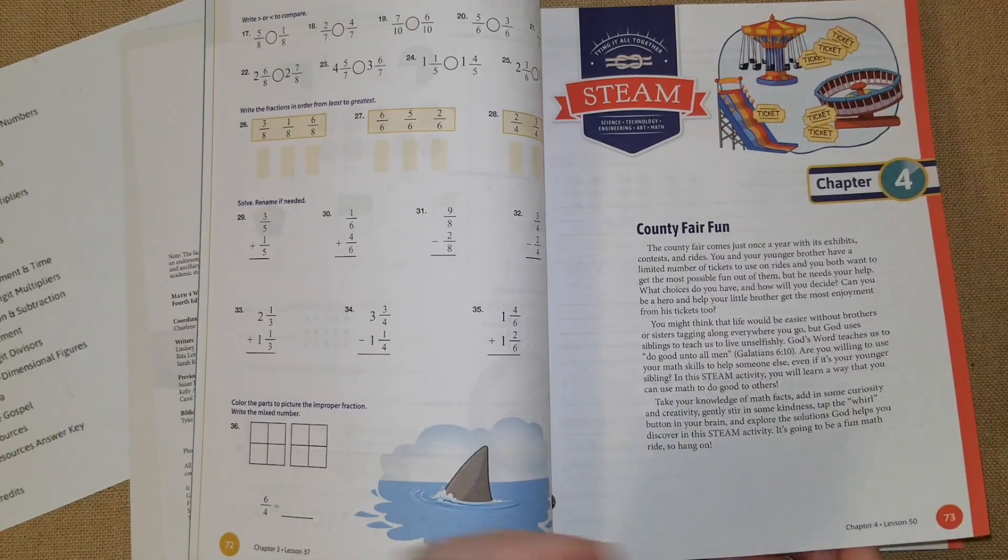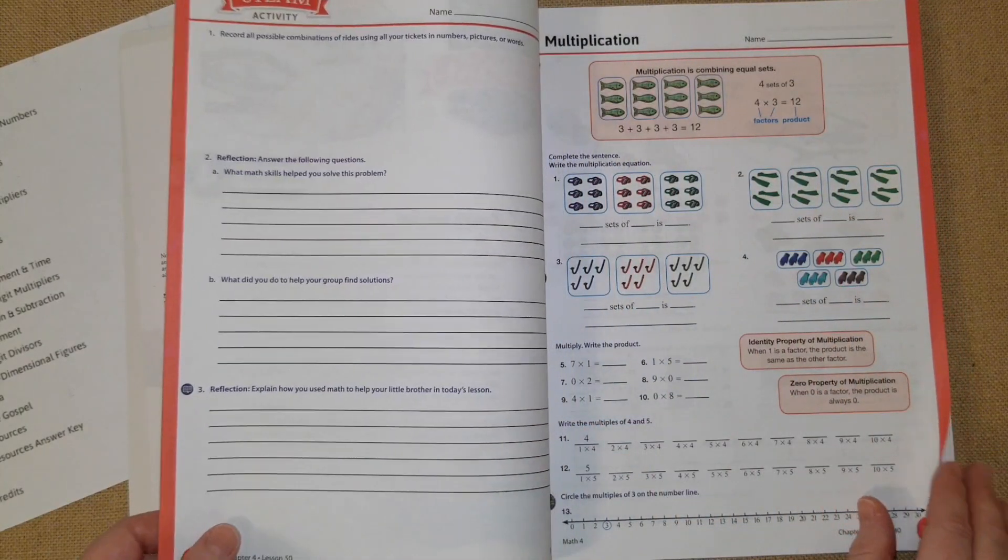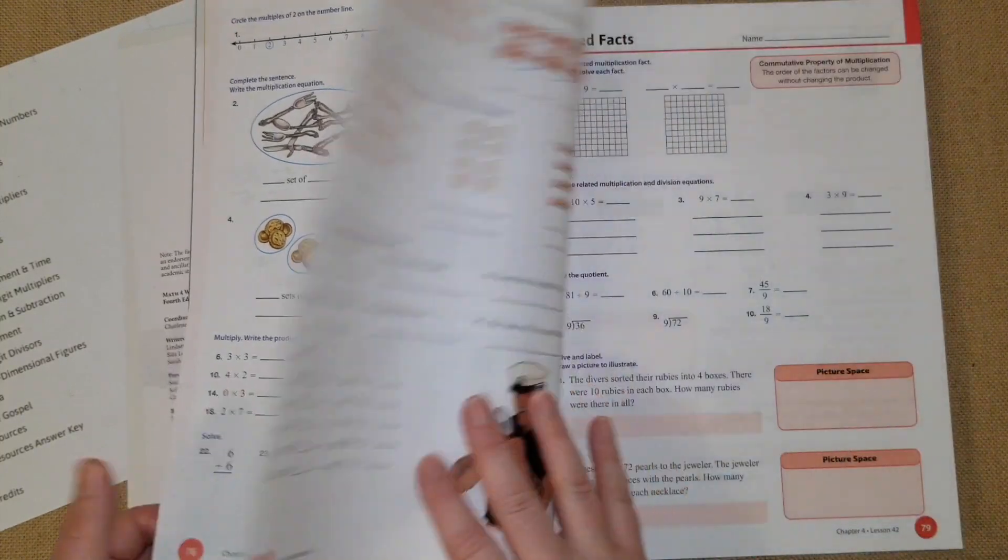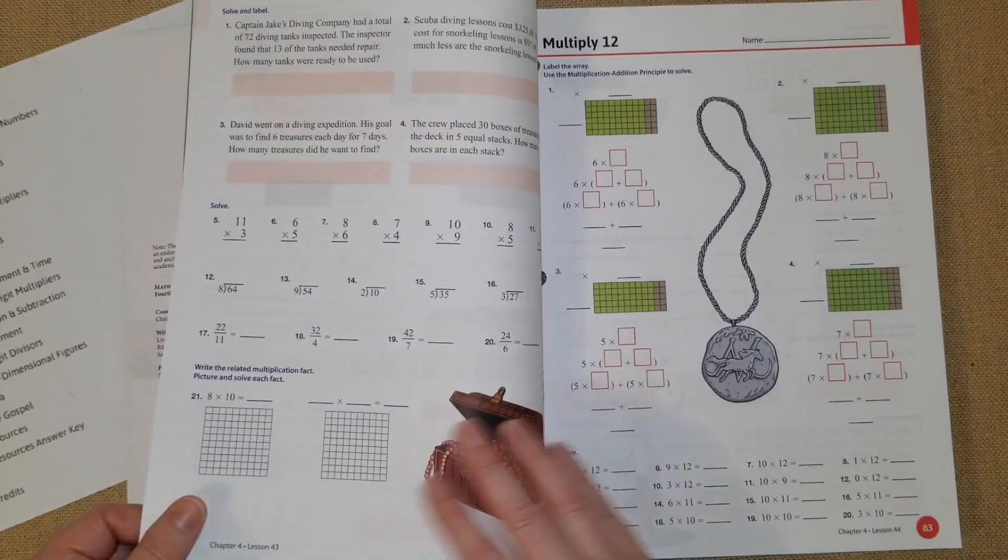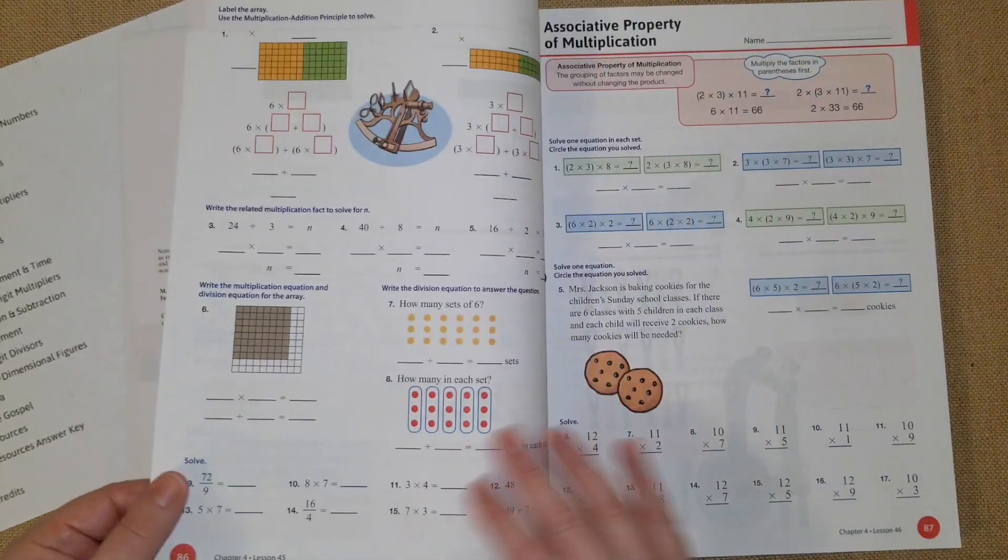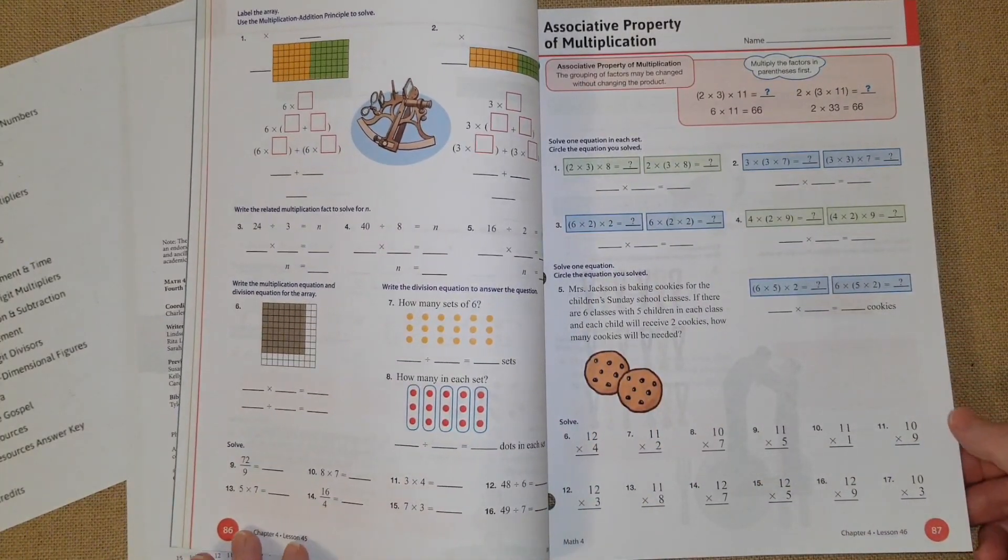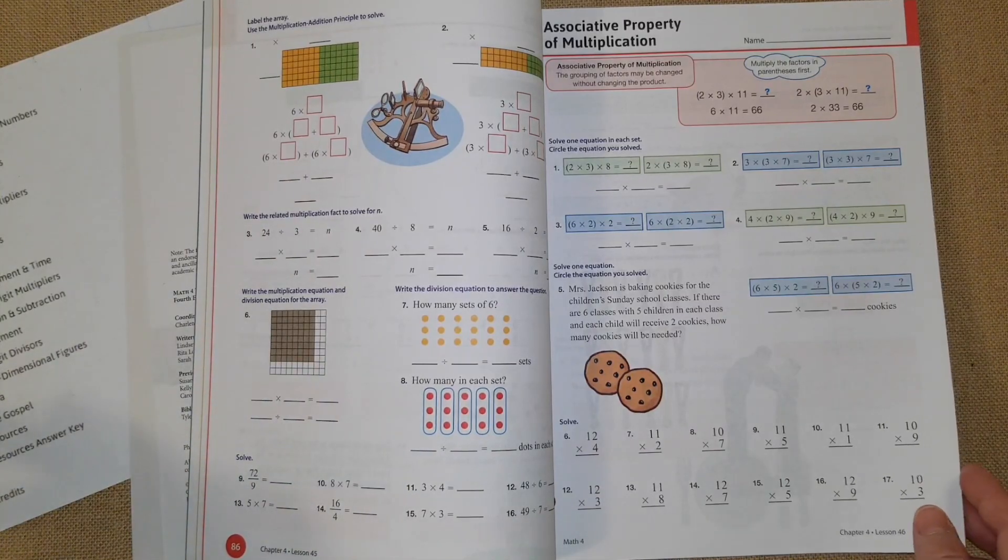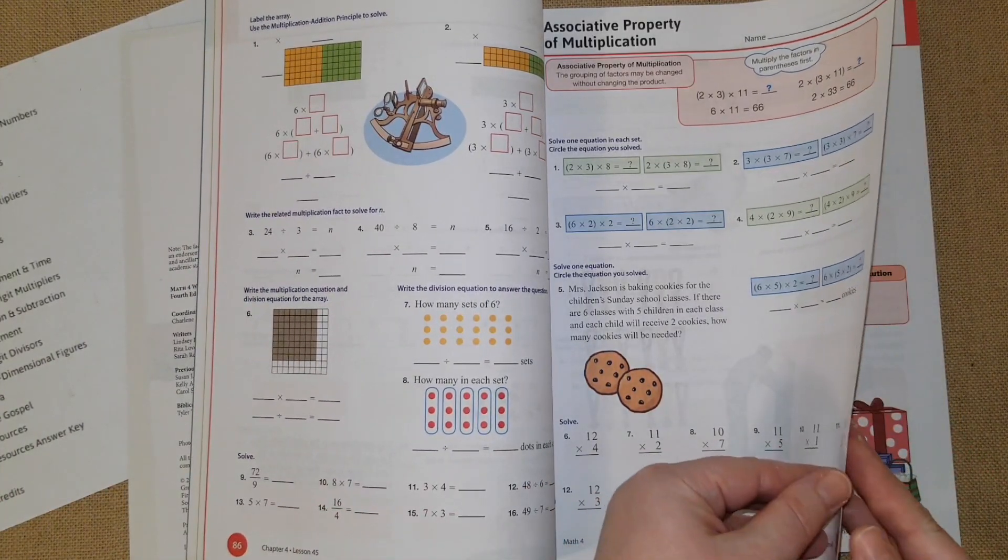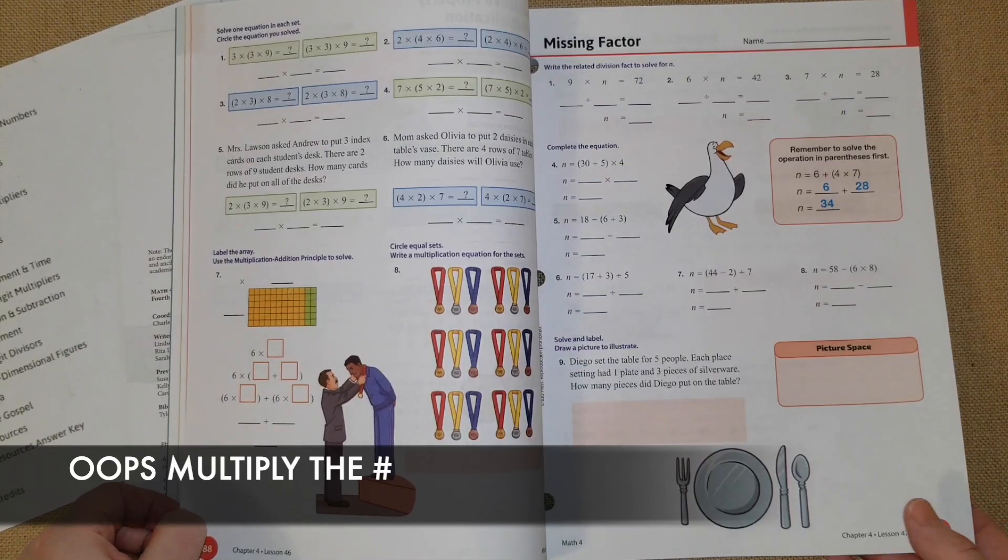Chapter four is multiplication and division. They have groupings, multiplication by twelve, then it gets a little harder. They have parentheses where you're going to be doing the multiplication in the parentheses first, then you're going to add the number. That is really great, the missing factor, so that's basic algebra.